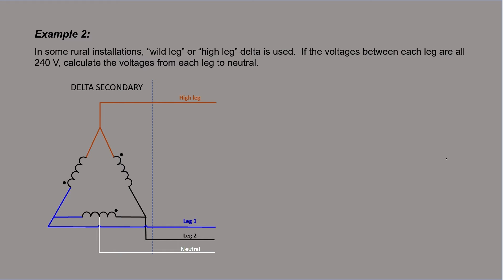This is common in rural installations in North America. If the voltages between each leg are all 240 volts, we're going to calculate the voltages from each leg to neutral. Let's go ahead and label all of our voltages. These are all in RMS.